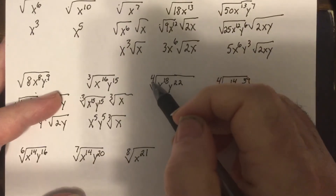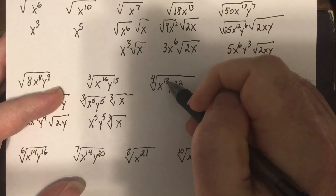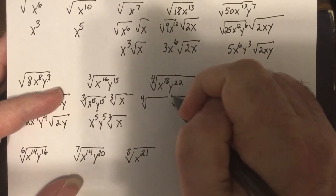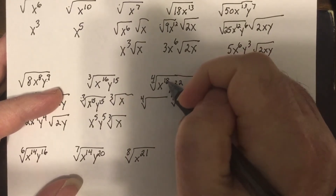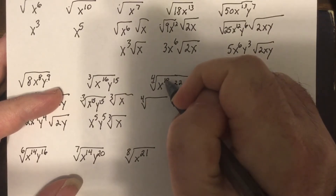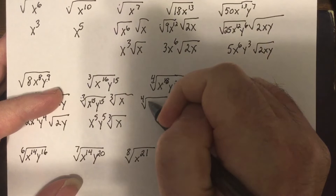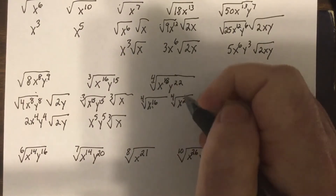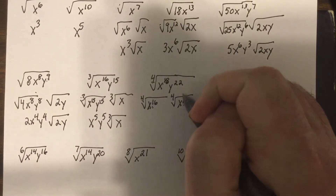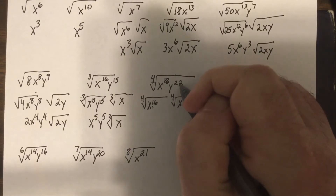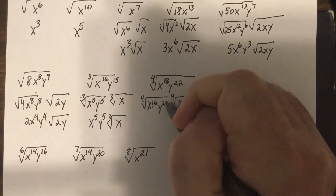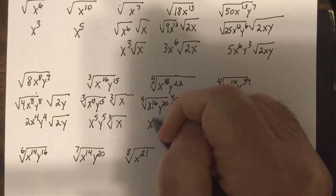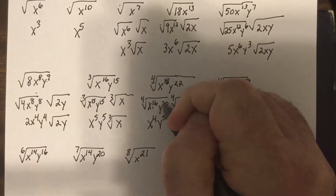Now we have a 4th root, so powers must be divisible by 4. For the 4th root of X to the 17th Y to the 21st: 17 isn't divisible by 4 but 16 is, leaving X as the remainder. 21 isn't divisible by 4 but 20 is, leaving Y squared as the remainder. So the result is X to the 4th Y to the 5th, with the 4th root of X Y squared.